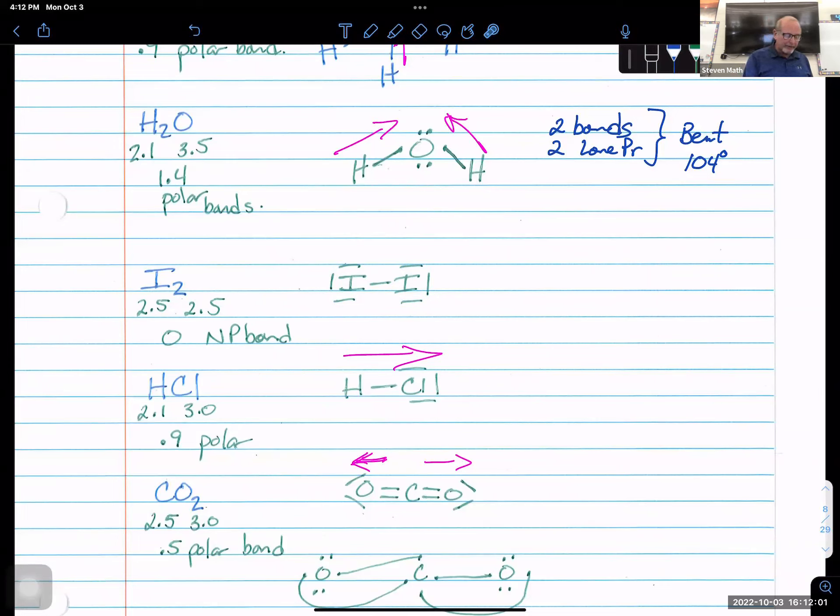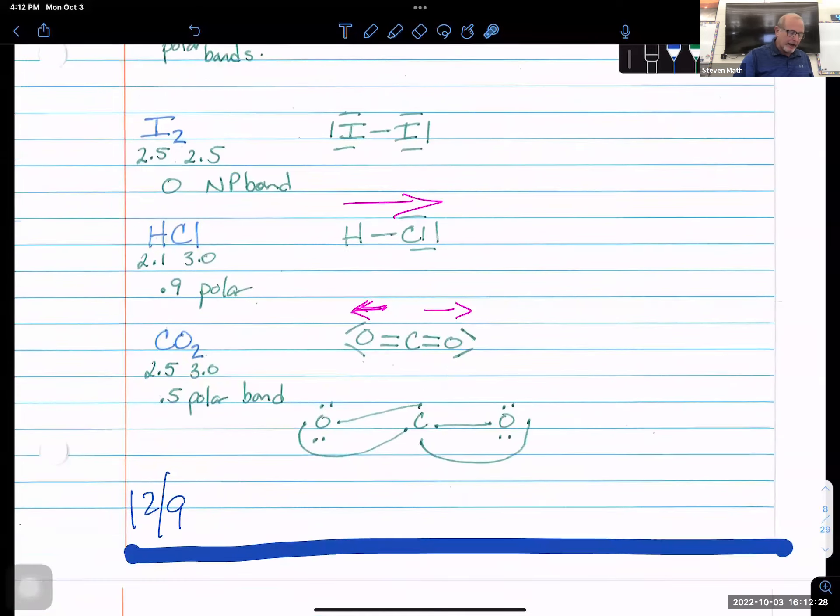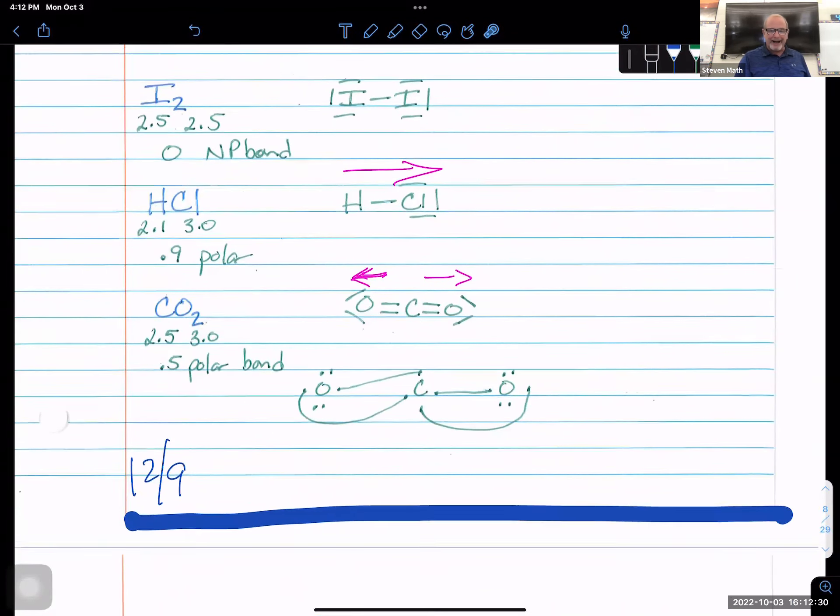Hydrogen chloride is another binary. 2.1, 3.0. I got 0.9. This puppy is polar and it's going to be polar towards the chlorine. Chlorine has 2, 4, 6, 7. Shares 1 with hydrogen. Lookie there. 8. The more electronegative element gets an octet.